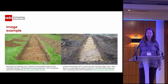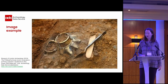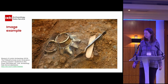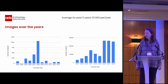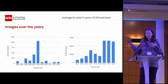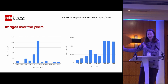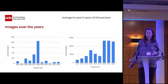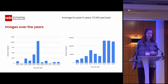If we go to images, you may be familiar with these kinds of things — lots of trenches in our archives — but we also have finds images, such as this one from Prittlewell. We've been getting so many images as of late that I've had to split up the graph so you can really see that we're getting nearly 10,000 images per year over the past few years.